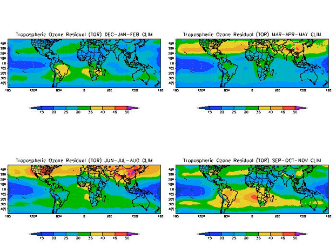Ozone in the atmosphere can be measured by remote sensing technology or by in-situ monitoring technology. Because ozone absorbs light in the UV spectrum, the most common way to measure ozone is to measure how much of this light spectrum is absorbed in the atmosphere.